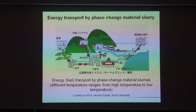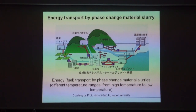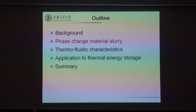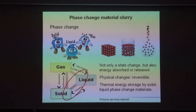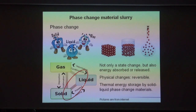Here is energy transport by phase change material slurry. This concept was pioneered by Professor Suzuki Hiroshi at Kobe University, who indicated that not only energy but also fuel could be transported by phase change material over quite long distances. There are three kinds of phase change in general; I focus on solid-liquid phase change, because in this phase change there is not much volume exchange. The latent heat associated with this phase change enables energy storage.